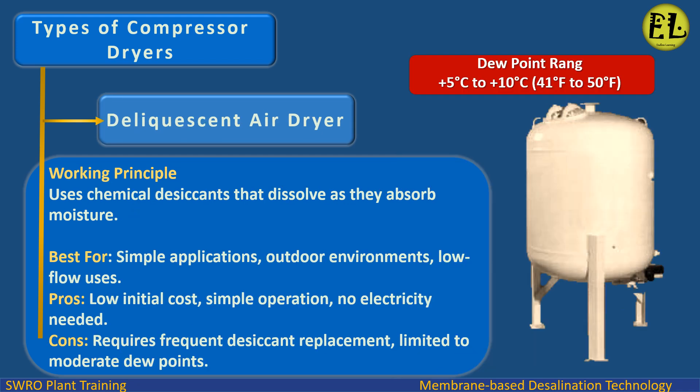Deliquescent air dryers. Working principle: uses chemical desiccants that dissolve as they absorb moisture. Best for simple applications, outdoor environments, and low flow uses. Pros: low initial cost, simple operation, no electricity needed. Cons: requires frequent desiccant replacement, limited to moderate dew points. Dew point range: 5°C to 10°C (41°F to 50°F).